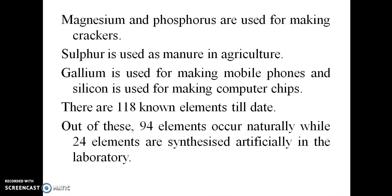There are 118 known elements to date. Of these, 94 elements occur naturally. The remaining elements are produced artificially in laboratories.